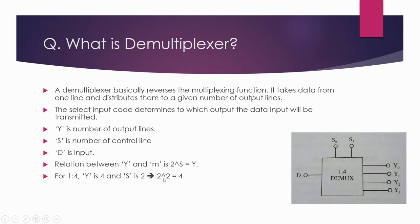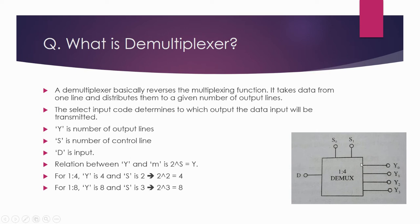So 2 select lines will be there. If it is 1-to-8, it means 8 output lines are there. So 2 to the power 3, which is 2 cubed equals 8, so 3 select lines will be there — one more select line for 1-to-8. In a demultiplexer, we get only one input, and that input is given to multiple output lines depending upon the select line.